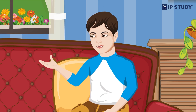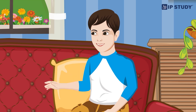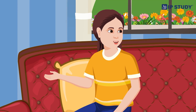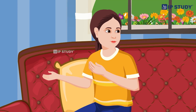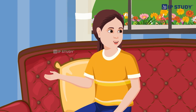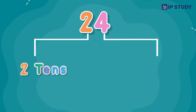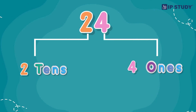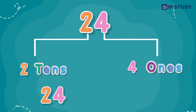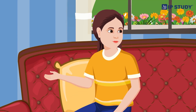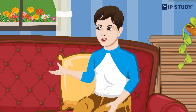Urvashi, you told me that today you learned about numbers and number names. What is that? Number names are like giving special names to each number — it's like each number has its own identity. For example, in the number 24, there are two tens and four ones, so we say twenty-four.